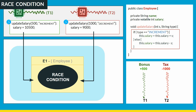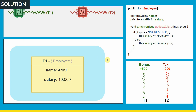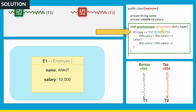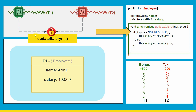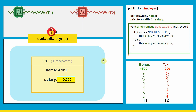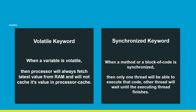To avoid two threads simultaneously executing that critical code, Java provides the synchronized keyword. When we write the synchronized keyword in front of a method, the method becomes synchronized, meaning only one thread will be able to execute that code at a given time. Even if two threads running on two cores both try to execute the updateSalary method, only one thread will acquire the lock and execute. Once that thread completes, only then will the other thread acquire the lock and perform the operation.